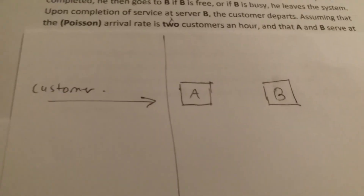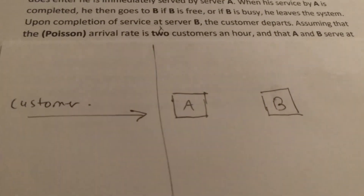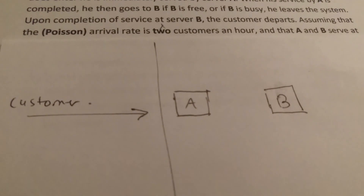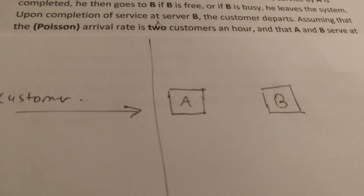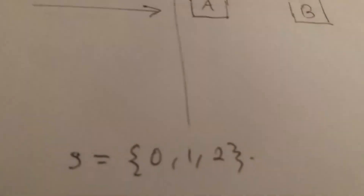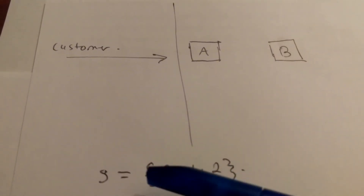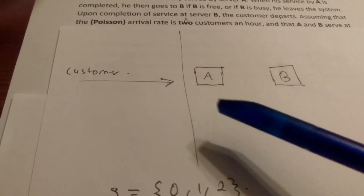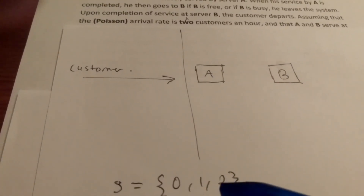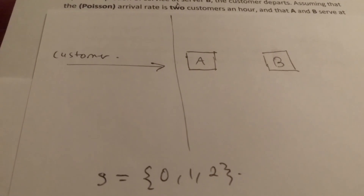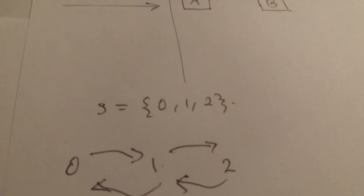If we were to model this traditionally as learned in class, we would consider the number of people in the system. Our state space would be: no one in the system, one person in the system, or two people in the system with both A and B full. If we draw a rate diagram, it has states 0, 1, and 2 with arrows between them.